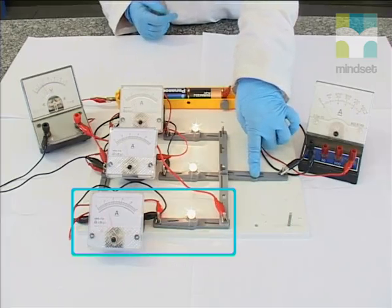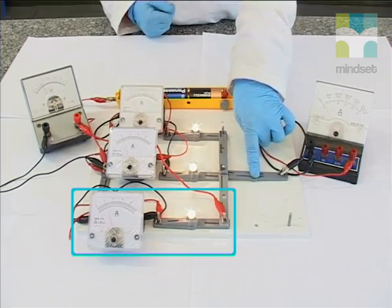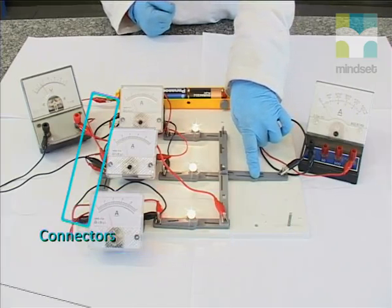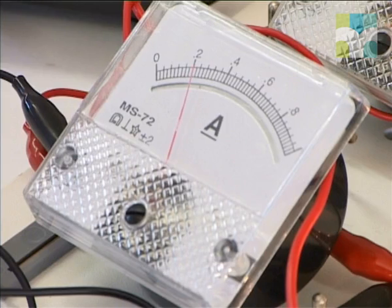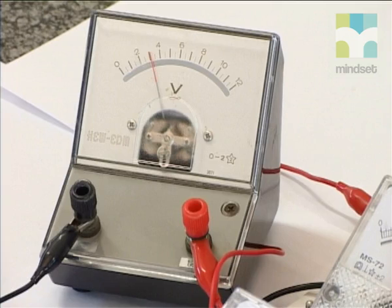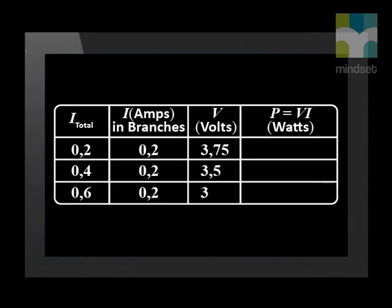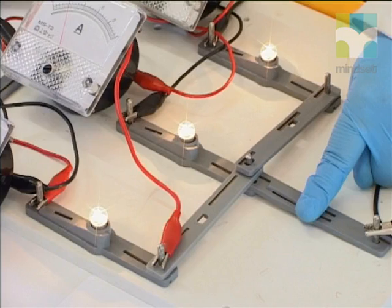Now we are going to add a third light bulb in parallel with an ammeter on its branch. Again, we reconnect the voltmeter so that it is now across all three light bulbs. The ammeter in the main circuit now reads 0.6 amperes, while the ammeter in each branch reads 0.2 amperes, and the voltmeter reads 3 volts. Let us add these values to the table. We will check the brightness of the bulbs — you should be able to see that it remains the same.